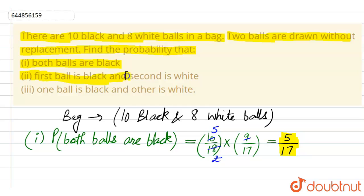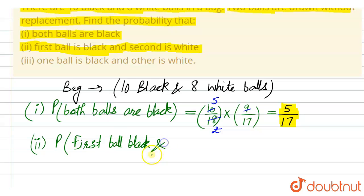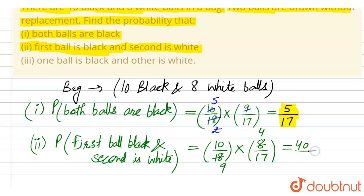For the second case, we need to find the probability that the first ball is black and the second ball is white. The probability that the first ball is black is 10 out of 18. For the second ball being white, we are left with 8 white balls out of 17 total balls remaining, so we have 8 divided by 17.